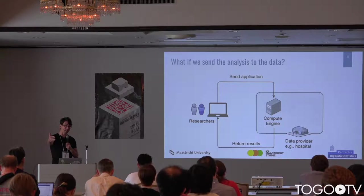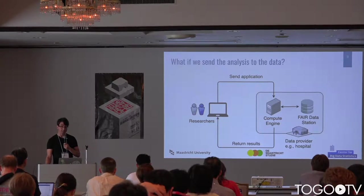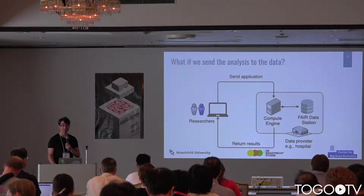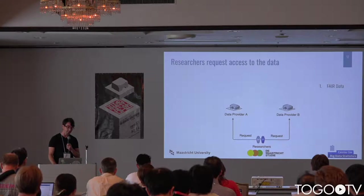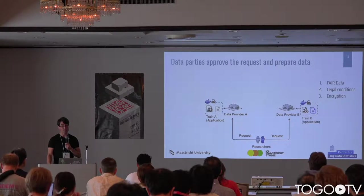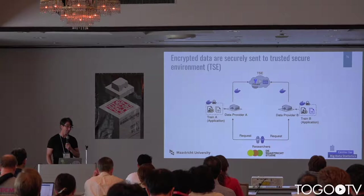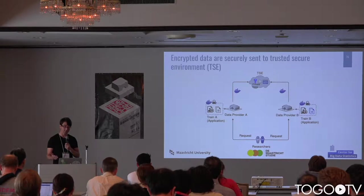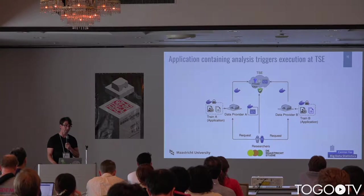We want to send our application or analysis to the data. What we propose is a FAIR data station which exposes the contents from a high level — so we know what kinds of data are in there and which stations are relevant. A researcher sends a request for data analysis to the data provider. They must meet certain legal conditions expected by the data provider. If those conditions are satisfied, the data provider encrypts the data and sends it to a trusted secure environment. This trusted secure environment can decrypt data from all parties, but none of the parties can see each other's data. The application to do the analysis is sent there, the analysis is performed, and only the results are returned — everything else is destroyed at that environment.